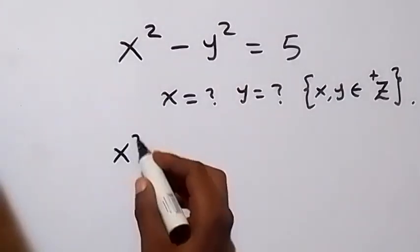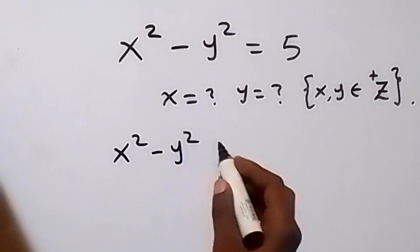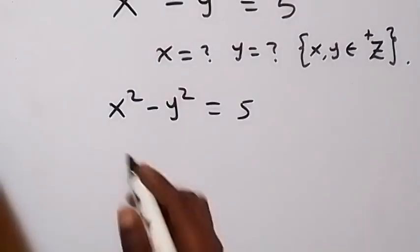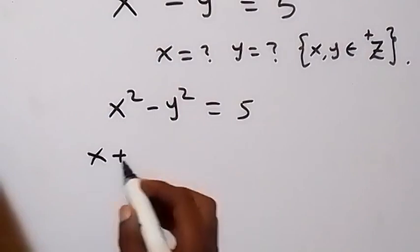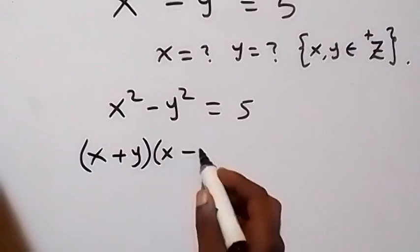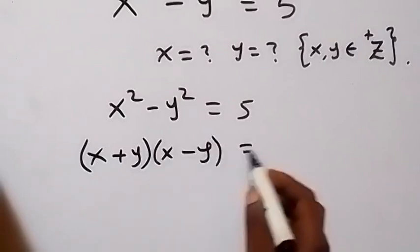And from there, we can express what we have here on the left-hand side as difference of two squares. And this will be x plus y times x minus y, now equals 5.